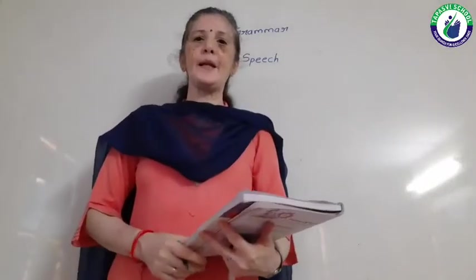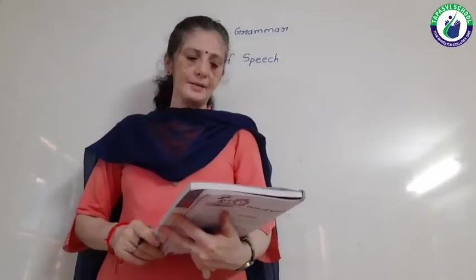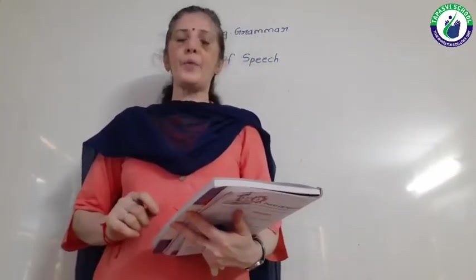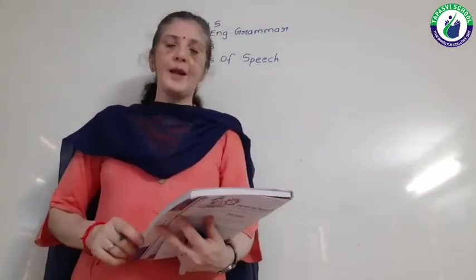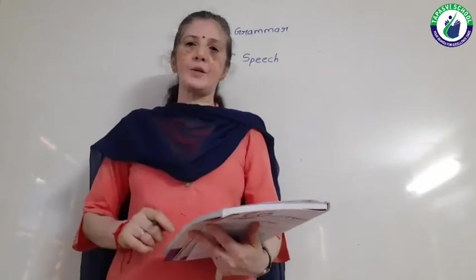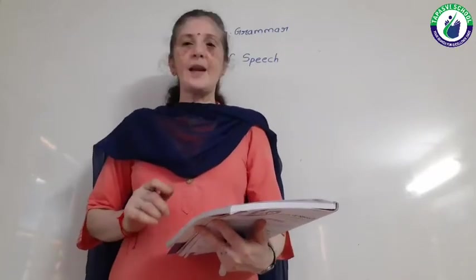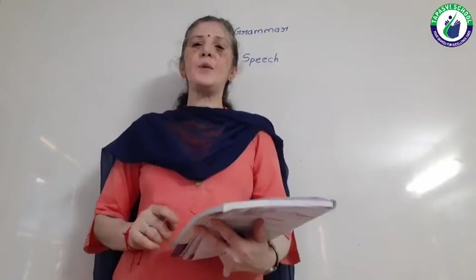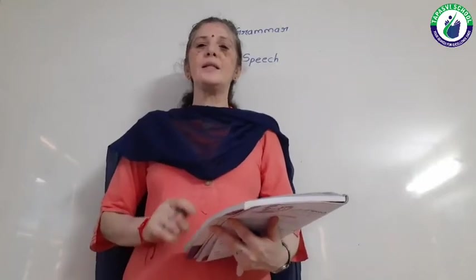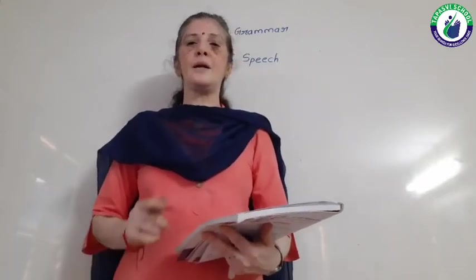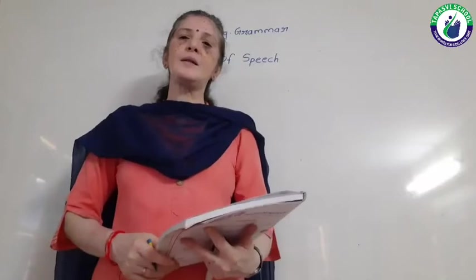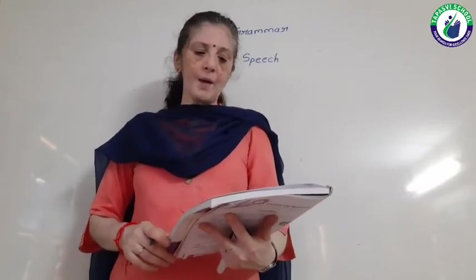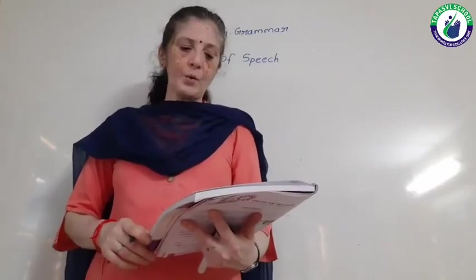Now I am going to explain Exercise A. Here you have to circle the nouns, underline the pronouns, and draw boxes around adjectives. First sentence: 'Suhana is a sweet girl.' Suhana and girl are nouns, and sweet is an adjective.